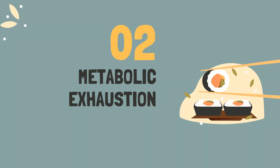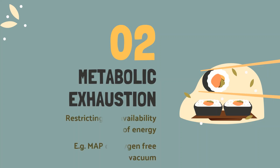Next is metabolic exhaustion. Metabolic exhaustion is a very important step, as the success of Hurdle Technology depends on ensuring the metabolic exhaustion. In this, the availability of energy is restricted, which can be done by using MAP — that is modified atmosphere packaging — or oxygen-free vacuum.